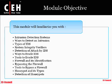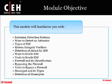In this module, we want to take a look at how these devices work so that we can better understand how to get past them. We'll go over what an intrusion detection system is, look at ways to detect an intrusion, and the types of IDS's that are out there. We'll also look at system integrity verifiers, ways that detection of an attack by an IDS takes place, then ways to evade the IDS and some tools you can use. We'll talk about a firewall and its identification, how we can bypass a firewall, and then look at honeypots and their types, and the detection of honeypots.